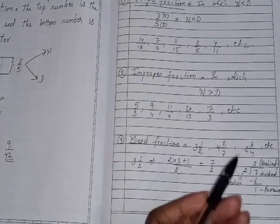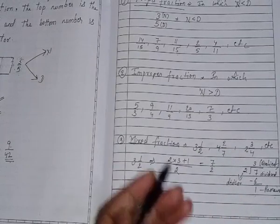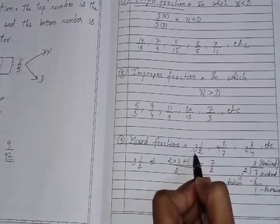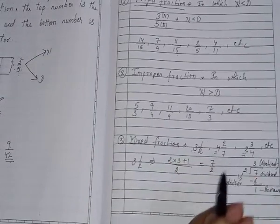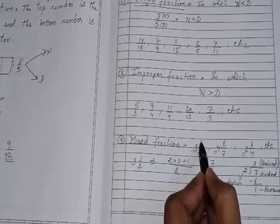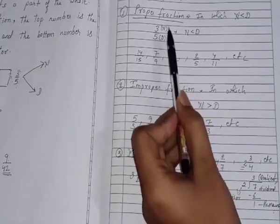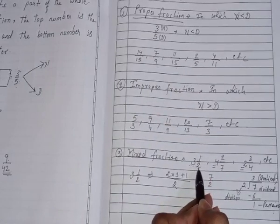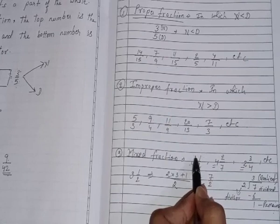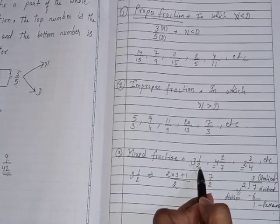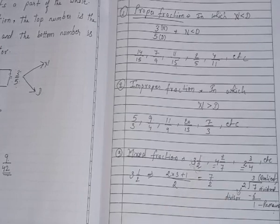Now, the third type is mixed fraction. What is mixed fraction? A mixed fraction: When we combine a whole number and a proper fraction together, we get a mixed fraction. Like, 3 is a whole number, 4 is a whole number, 2 is a whole number. These are whole numbers which are combined with proper fraction. Its numerator is smaller than denominator. It means this is proper fraction and this is whole number. When we combine a whole number with a proper fraction, we get a mixed fraction.